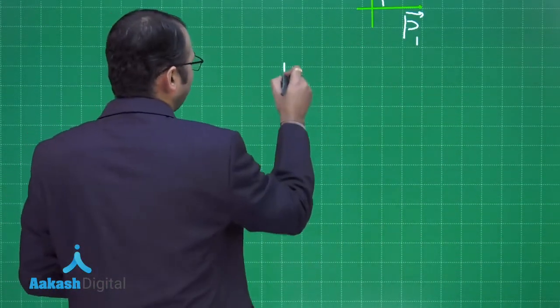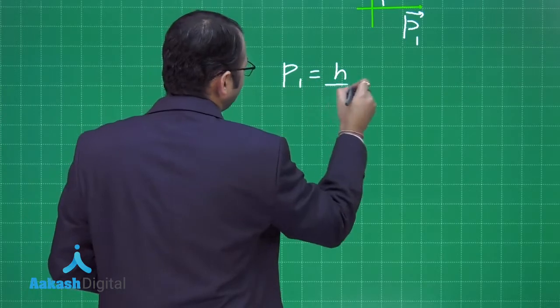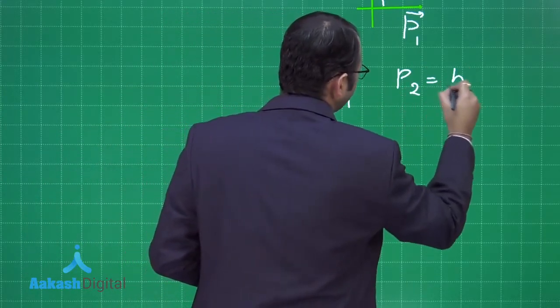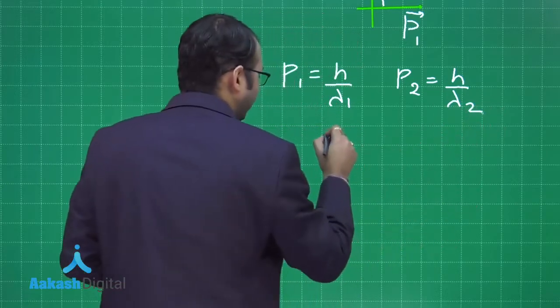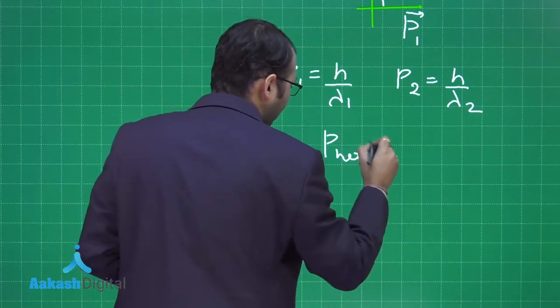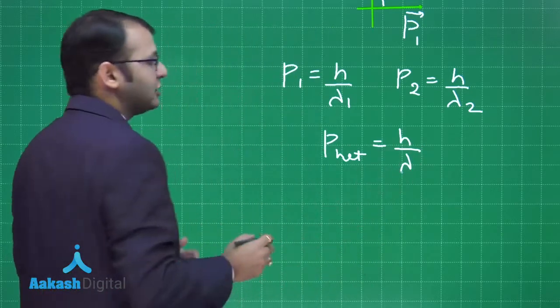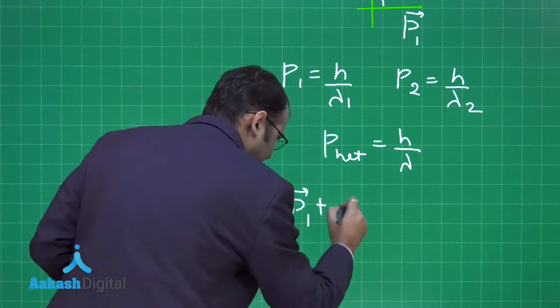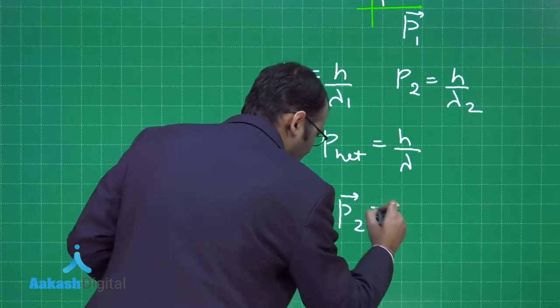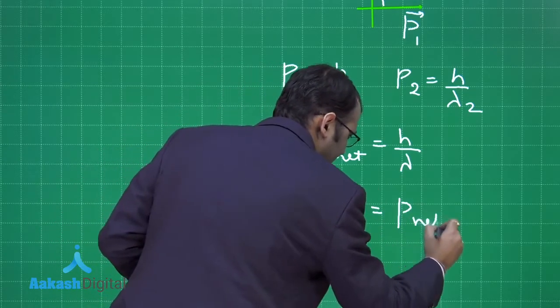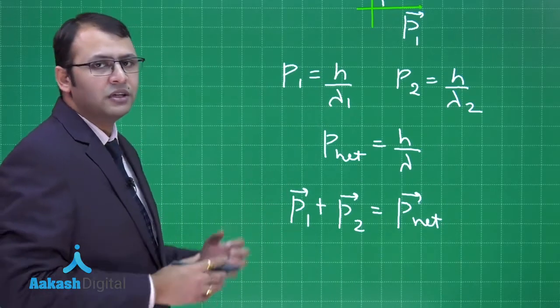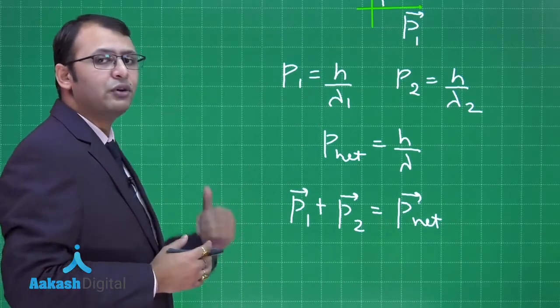The net momentum will be the resultant of these two. According to de Broglie's formula, P1 equals H by lambda 1, and similarly P2 equals H by lambda 2. The net momentum particle will have wavelength lambda as per the question. Vectorially P1 plus P2 equals P net. As no external force is acting on the system, net momentum is conserved before and after collision.